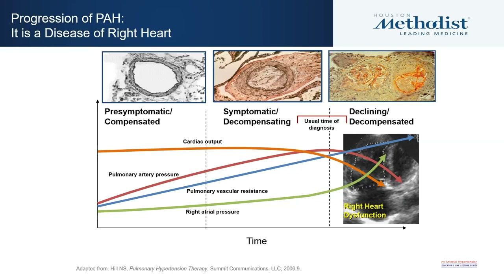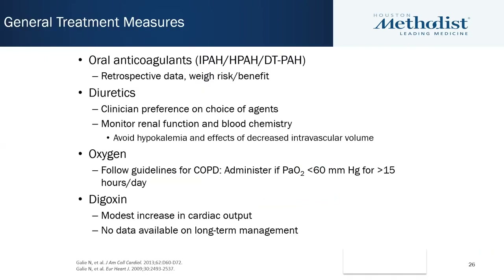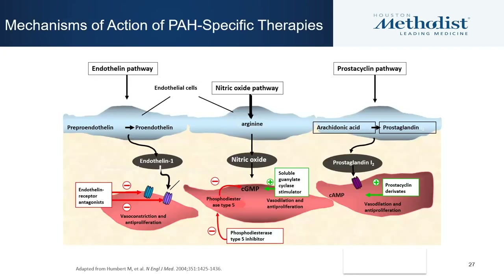General treatment measures include oral anticoagulants — used mainly in idiopathic PAH patients on IV therapies due to clotting risk, though there is no randomized controlled data, only registry data. Diuretics are used to manage RV failure, oxygen to manage hypoxemia, and digoxin to modestly increase cardiac output.